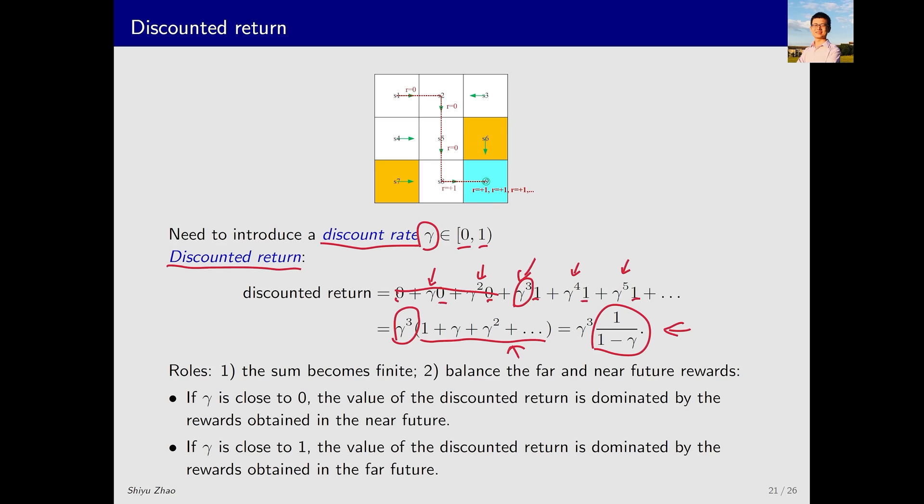What can we achieve by introducing a discount rate? First, whereas the sum diverged, it now becomes a finite value. Second, the discount rate can balance the far and near future rewards. What does this mean? If gamma is close to 0, due to the high exponent values, the terms gamma cubed, gamma to the 4th power, gamma to the 5th power decay rapidly. Thus, the discounted return mainly depends on the near future rewards. Conversely, if gamma is close to 1, far future rewards, decaying slowly, contribute more to the accumulated reward. By controlling gamma, we can influence the agent's policy. Reducing gamma makes the agent more short-sighted, focusing more on immediate rewards, while a larger gamma makes it more far-sighted, emphasizing long-term rewards. We will see examples about this point in future lectures.